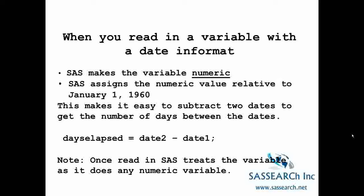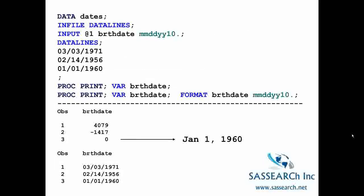In this example, we're creating a variable days_elapsed equals date2 minus date1. The important thing to remember is that once SAS reads in a date variable, it treats it as it does any other numeric variable. Here's an example program where I'm reading in three observations and the variable I'm reading in is birthdate. I'm giving it an informat mmddyy10. So this raw data has the appearance 03/03/1971, and the informat that goes with that appearance is mmddyy10.